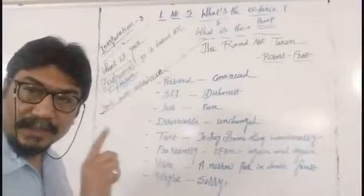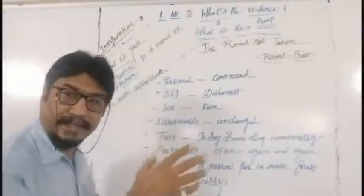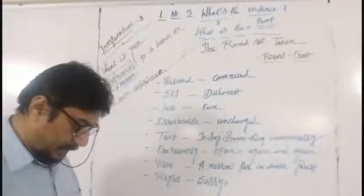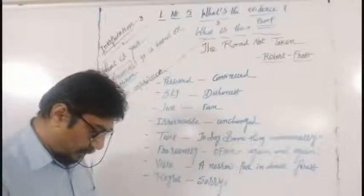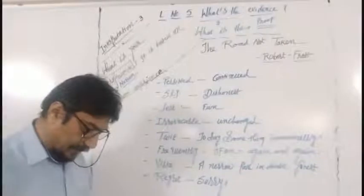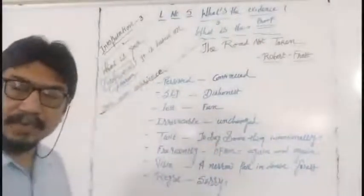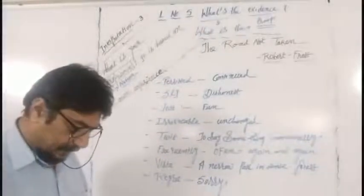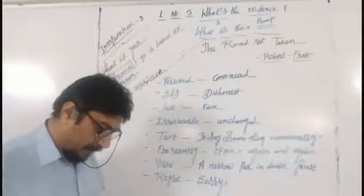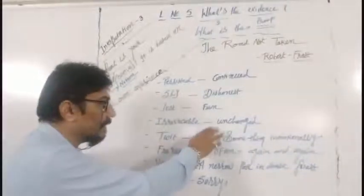Thomas had invariably fused over irrevocable choices of the most minor sort made daily with Frost in 1914. Irrevocable means unchanged, what you cannot change. The choices of the most minor sort made only with Thomas. He used to be with Frost in daily works and at the time he made little unchangeable choices in his life.